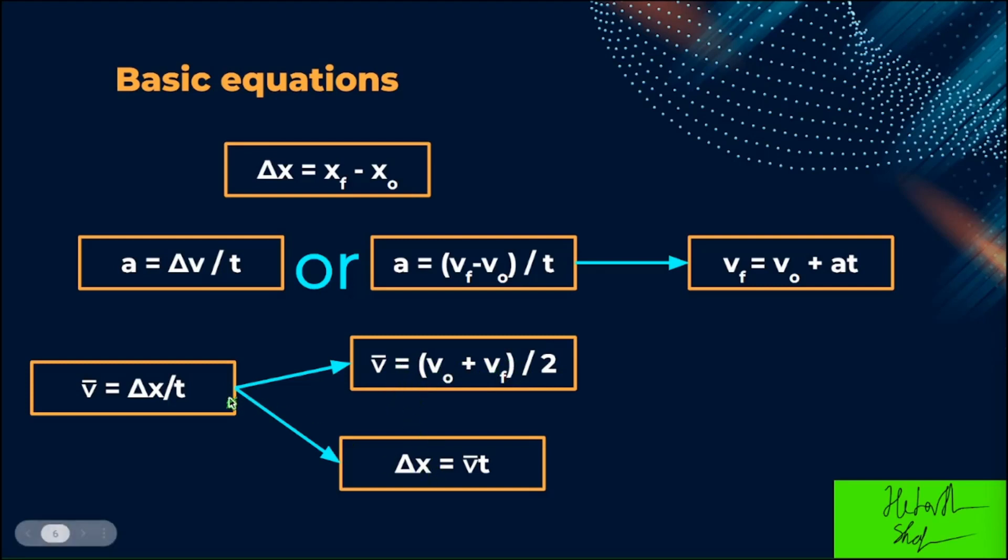And this can also be rearranged as delta x equals v bar t, by just multiplying by t on both sides.